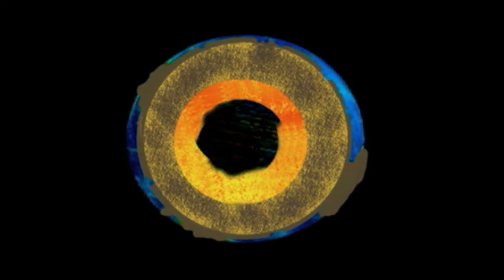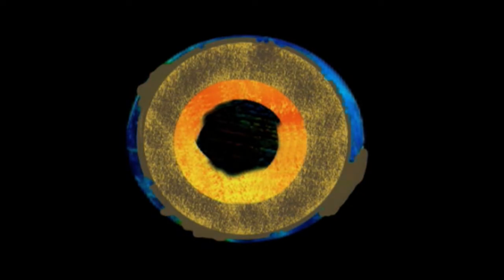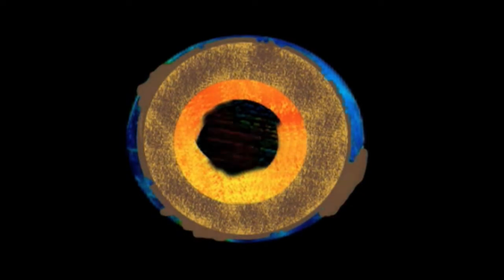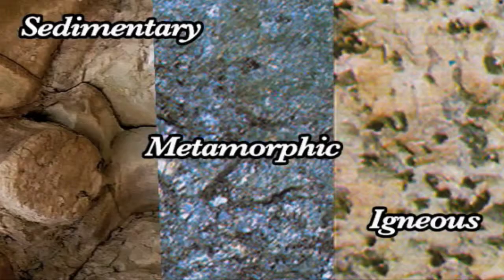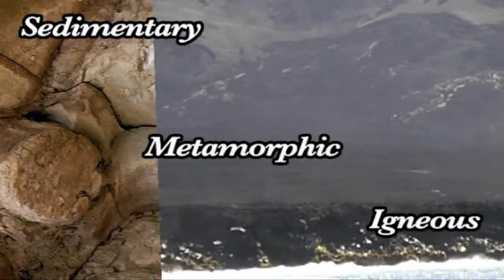On the top is a layer of lighter rock that is heavier under the oceans and lighter under the continents. This top layer is the part of the Earth that we see and live on. There are three kinds of rock on the surface of the Earth.